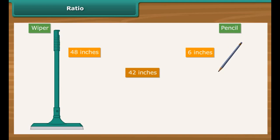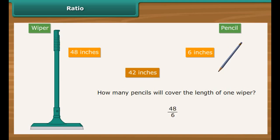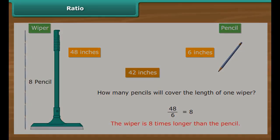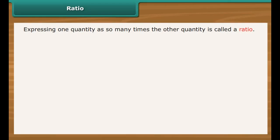How else do we express the variation? Let us ask ourselves this question: how many pencils will cover the length of one wiper? The answer is 48 divided by 6, that is 8. In other words, the wiper is 8 times longer than the pencil. Expressing one quantity as so many times the other quantity is called a ratio.